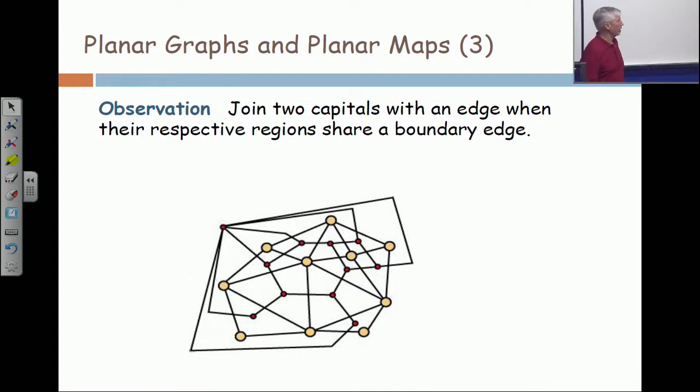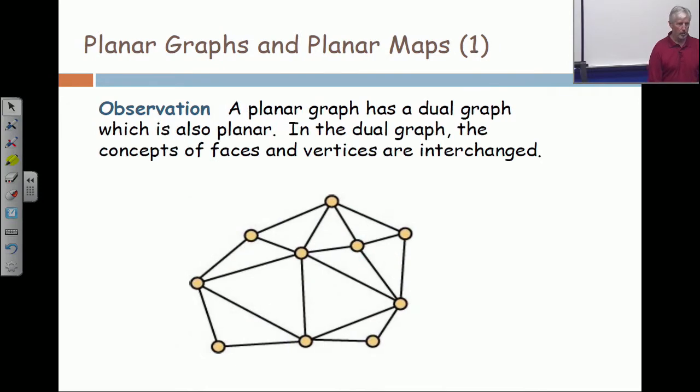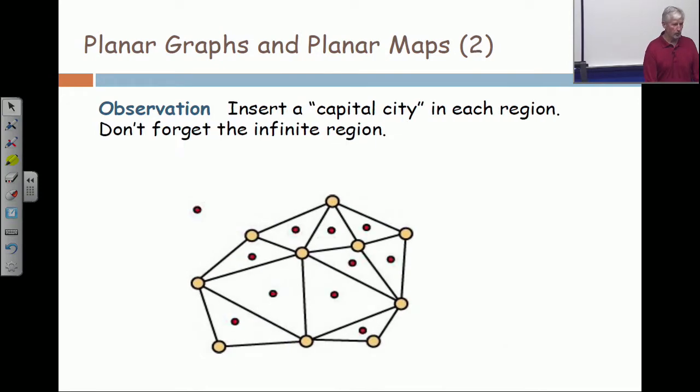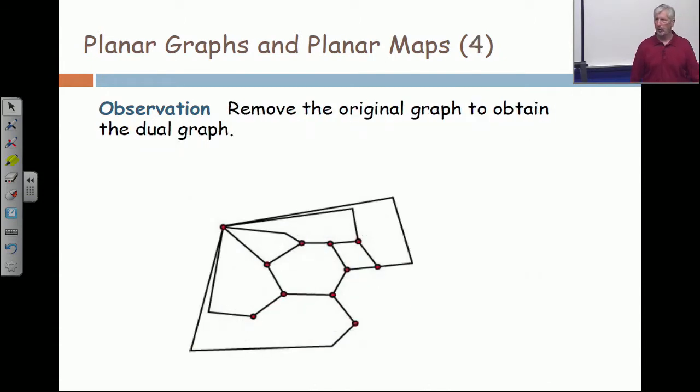You join two capital cities when their respective regions share a boundary edge, and then you can remove the original graph and you have the graph formed by the capital cities. And this graph is called the dual of the original one. So let me scan backwards through those pictures. There's the original graph, insert capital cities, put edges, erase the original one, and there's the dual map.